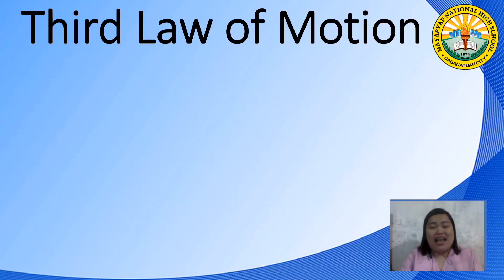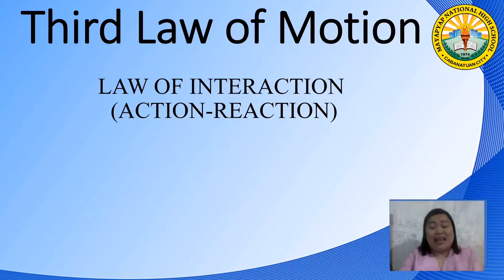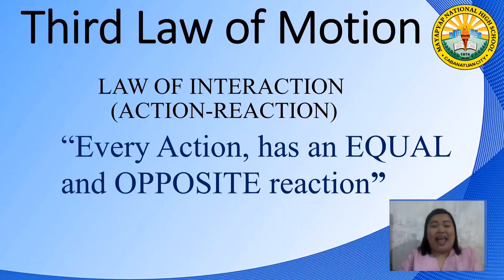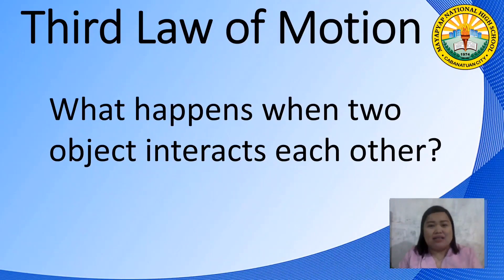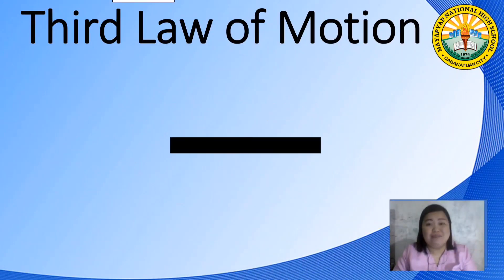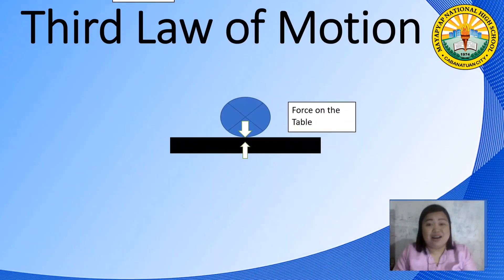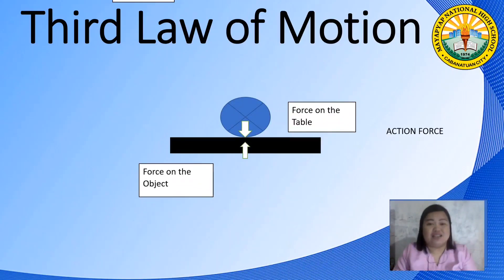The third law of motion is the law of interaction — action and reaction. It states that every action has an equal and opposite reaction. The question to answer is: what happens when two objects interact with each other? When you place a ball on the table, the table exerts a force on the ball, and the ball exerts a force on the table. There are two forces acting on each interaction — the action force and the reaction force — with the same magnitude but in opposite directions.